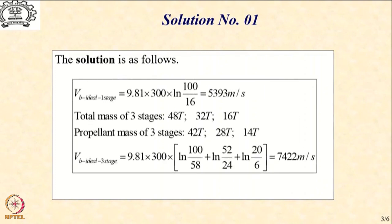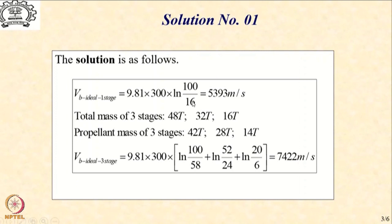Let us first consider the ideal burnout velocity for the case of one-stage operation. In this case, all 84 tons of propellant would be burnt in a single shot, so the ideal burnout velocity expression is 9.81 × 300 × ln(100/16), which is what will be left at the end of burnout, resulting in a burnout velocity of 5,393 meters per second.